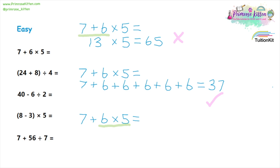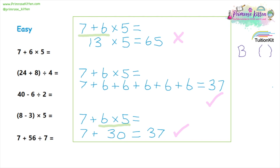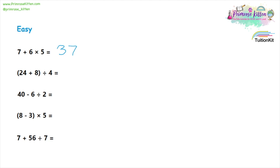Six times five is the bit we need to do first because it's a multiplication, and that needs to become an addition. So six times five is 30, so our actual sum is seven plus 30, giving us 37. The reason is BIDMAS. The B is for brackets, then we have indices, D is division and M is multiplication, and the last are addition and subtraction. This is the order that sums have to be done in.